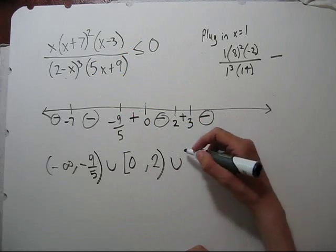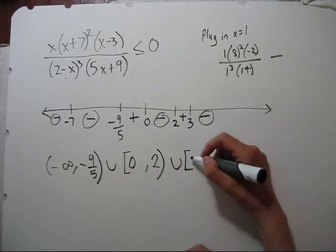Three, that makes the numerator zero. And we're allowed to do that, so we will include that. And then we go to infinity.